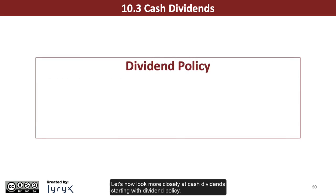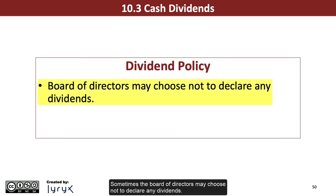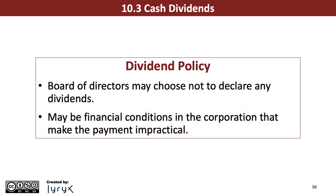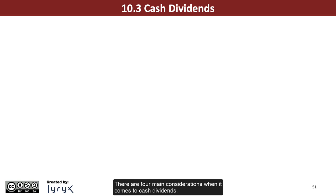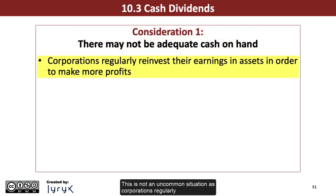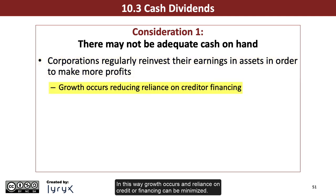Let's now look more closely at cash dividends, starting with dividend policy. Sometimes the board of directors may choose not to declare any dividends. There may be financial conditions in the corporation that make the payment impractical. There are four main considerations when it comes to cash dividends. First, there may not be adequate cash on hand to pay dividends. This is not an uncommon situation, as corporations regularly reinvest their earnings and assets in order to make more profits. In this way, growth occurs and reliance on creditor financing can be minimized. As a result, there may not be enough cash on hand to declare and pay a cash dividend.